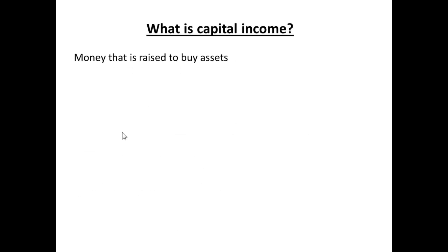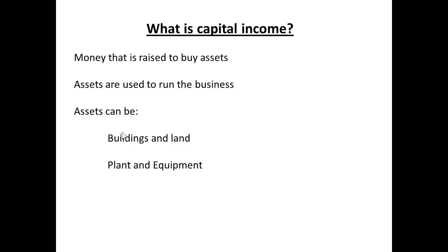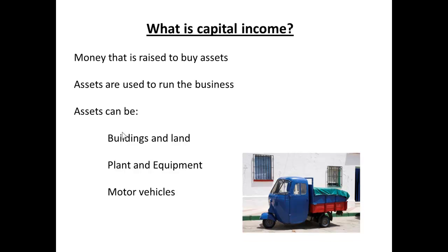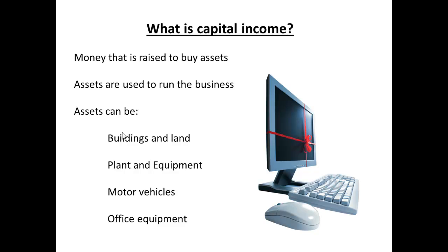So what do we mean by capital income? Capital income is the money that we use to buy assets — we raise money to buy assets, and those assets are used to run the business. What can the assets be? We can have buildings and land, plant and equipment, motor vehicles, and office equipment. All of these are considered assets used to run the business, and most of them are expected to last for a considerable period of time. We will see why that is important later.